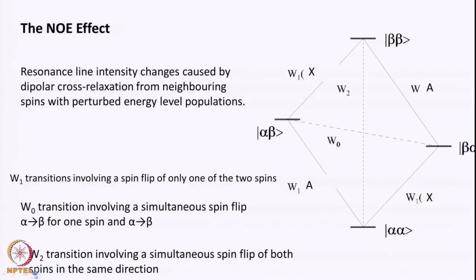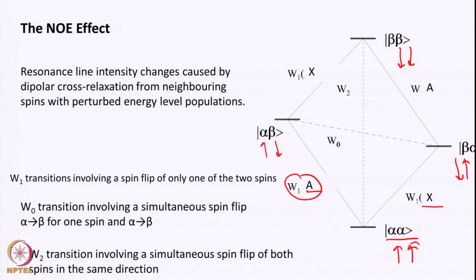Just to remind you what we discussed earlier: we have two spins, say spin A and spin X, weakly coupled. There are four energy levels — both spins alpha-alpha, one up one down, one down one up, and both down. There are four transitions: omega_1 single quantum transitions where only one spin is flipping — alpha becoming beta for the A spin, and similarly for the X spin. These are single quantum transitions.